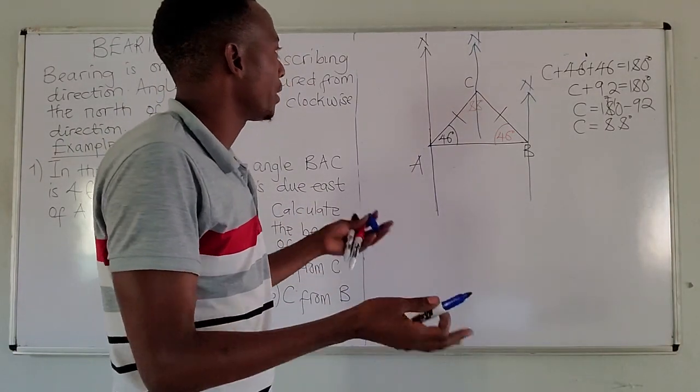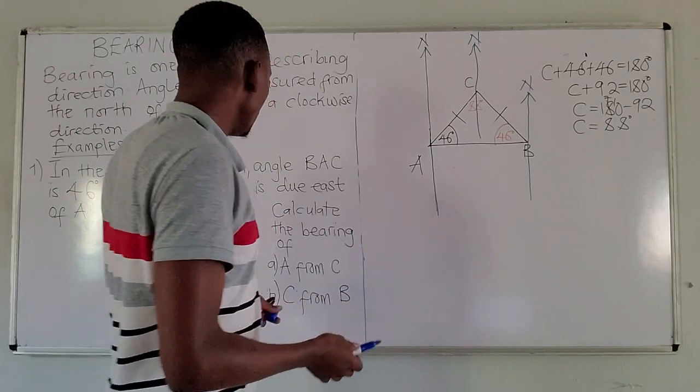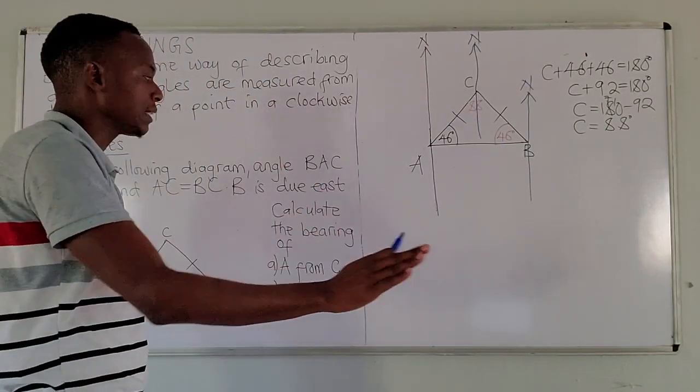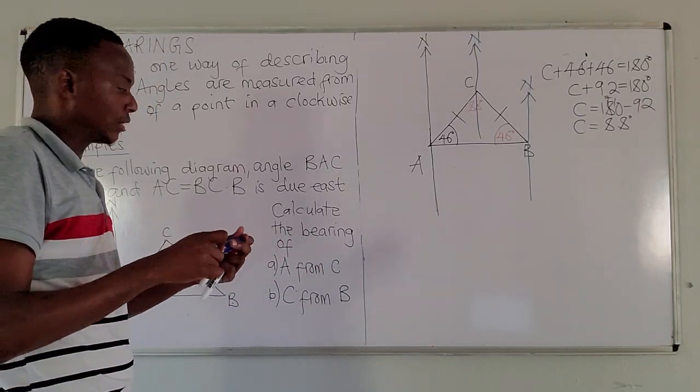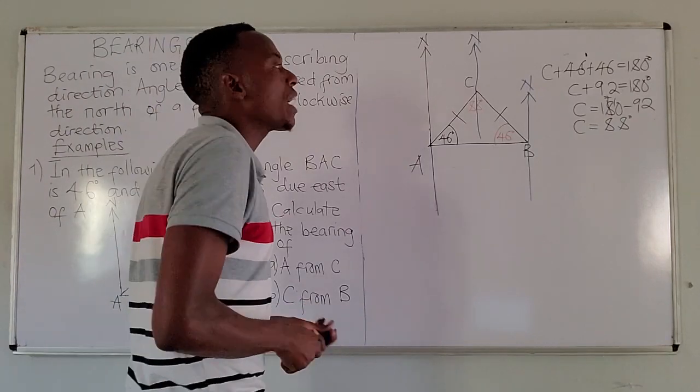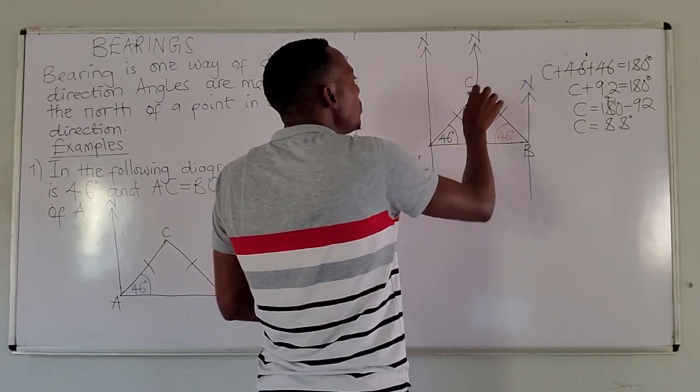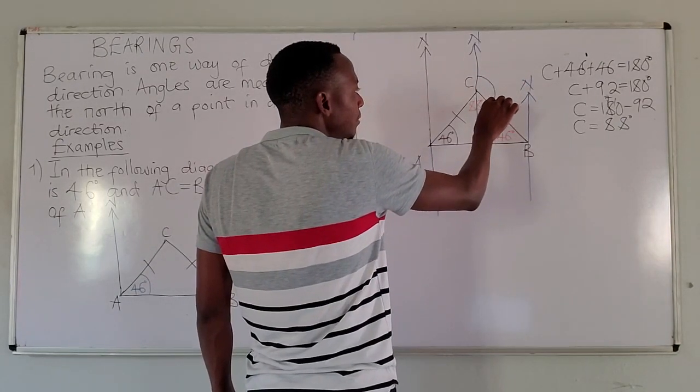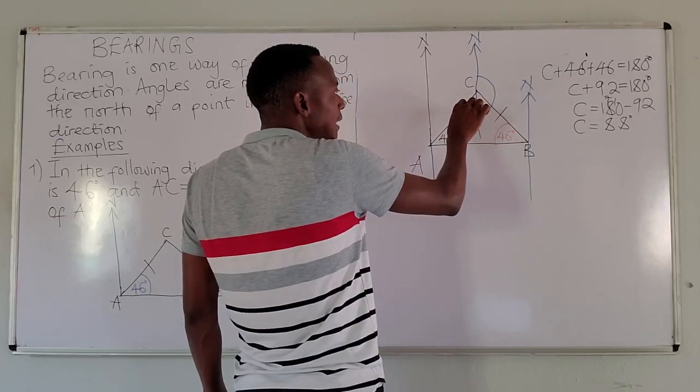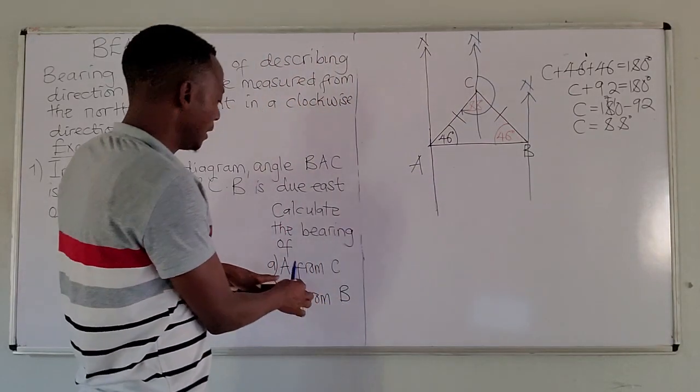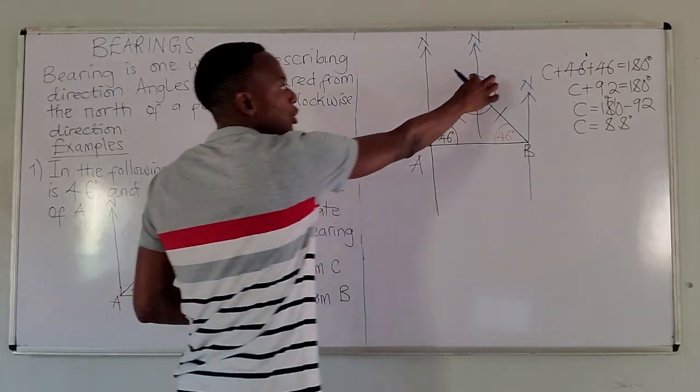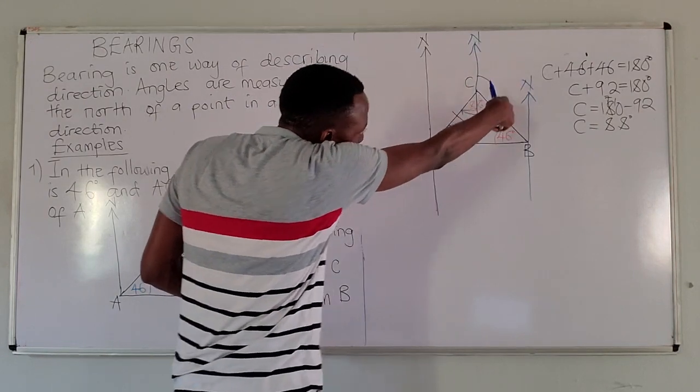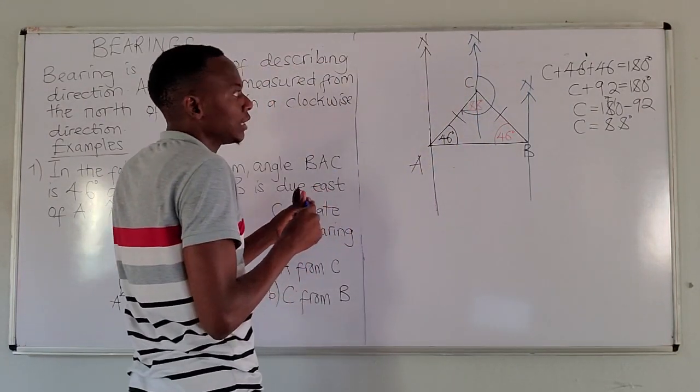For example, we have to find the bearing of A from C. 'From' is the word we need to take keen interest in. From C, so we go where there is C, the point C. Then we start measuring the angle from the north of C, moving in a clockwise direction, until we hit the line joining A and C. This shows the bearing of A from C.